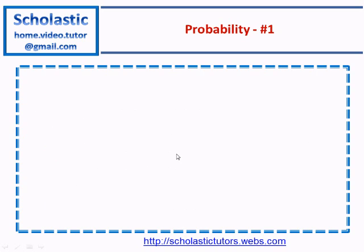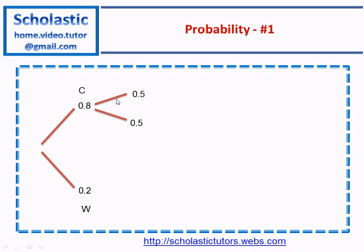To draw a tree diagram we start with two branches: correct and wrong. The correct probability is given as 0.8 for the first question and 0.2 is the wrong probability. After answering the first question, the person can attempt the second one. If correct the first time, the probability is 0.8, and the chance of getting the second question correct is 0.5, and getting it wrong is 0.5. The third question has a low probability of 0.2 for correct and 0.8 for wrong.